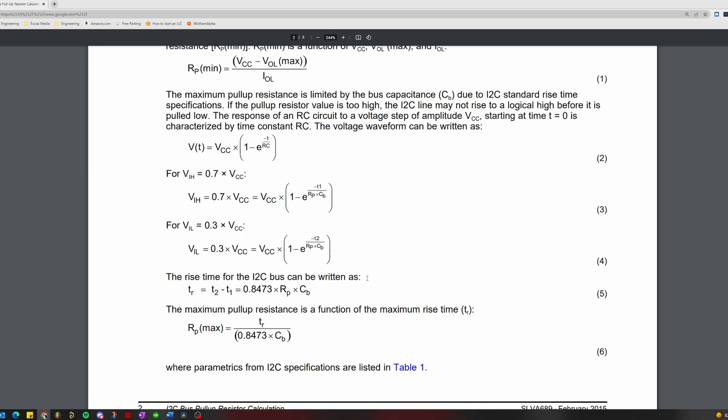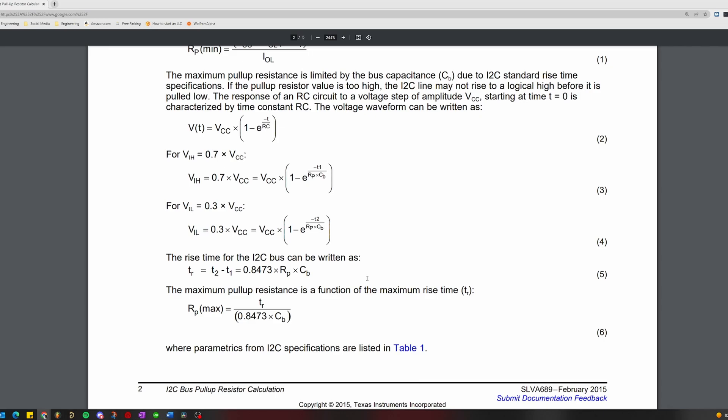Taking this information into account, we are able to derive an equation for the maximum allowable value for your pull-up resistors based on your bus capacitance and your maximum allowable rise time. In this equation, TR represents the rise time, RP is the pull-up resistor value, and CB represents the total bus capacitance.